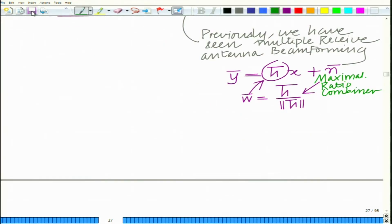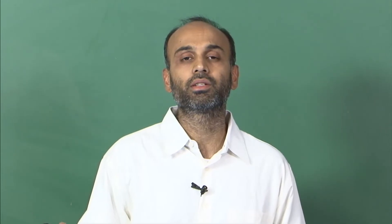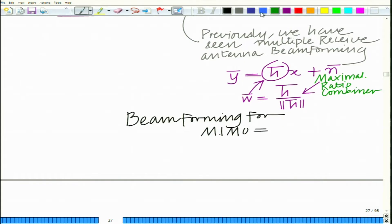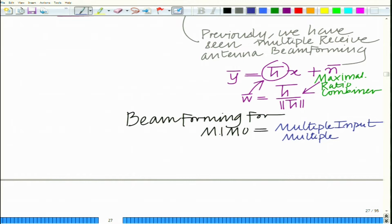Now, what we want to do is extend this to a MIMO system. A MIMO system has not just multiple receive antennas, but also multiple transmit antennas — multiple antennas at both the transmitter and the receiver. That is why it is known as a MIMO system, or multiple input multiple output. We want to consider this interesting and non-trivial problem of beamforming for MIMO — multiple input and multiple output.